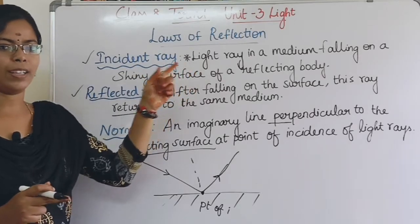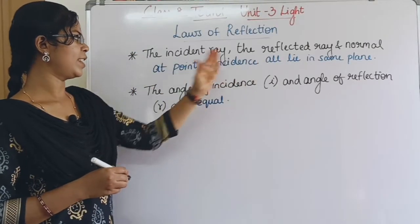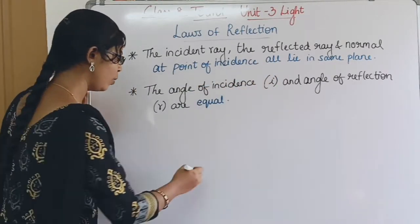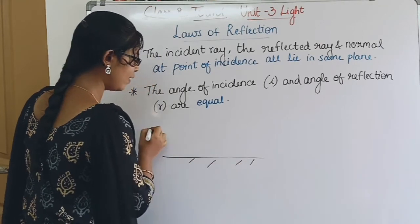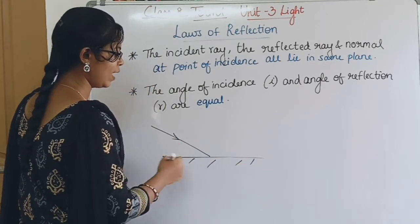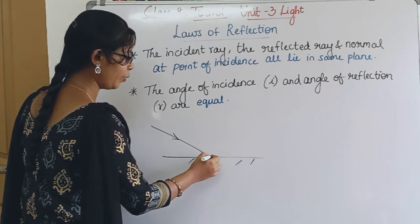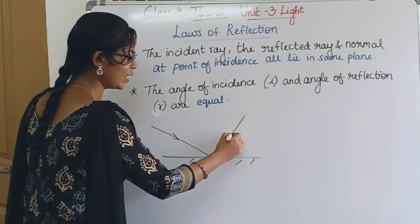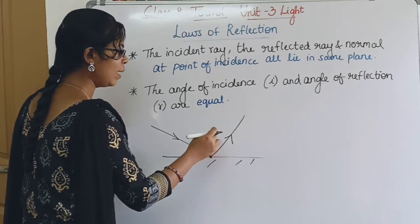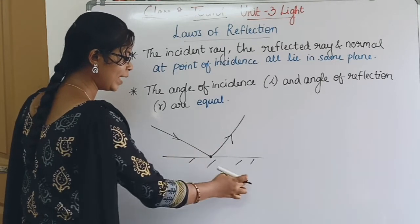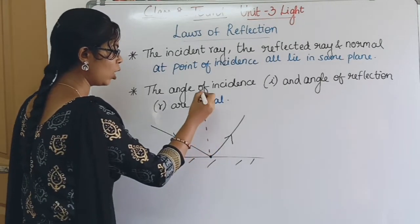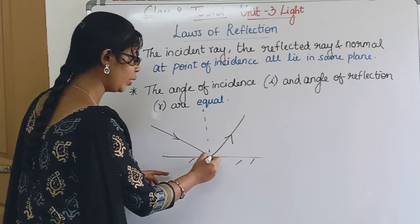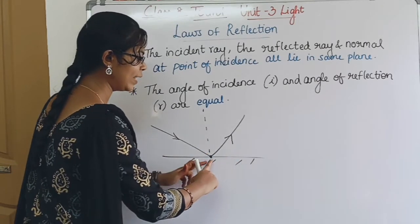Now that connects to the laws of reflection. The first law: the Incident Ray, the Reflected Ray, and the Normal at the point of incidence all lie in the same plane. The incident ray hits the mirror at the point of incidence, the reflected ray goes out, and the normal is the perpendicular line — all three lie in the same plane.